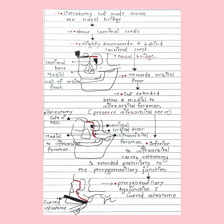The first osteotomy cut is made across the nasal bridge, above the lacrimal crest, and slightly downwards and behind the lacrimal crest, then towards the orbital floor. This cut is extended below and medial to the infra-orbital foramen, because we have to preserve the infra-orbital nerve. Then, inferior to the infra-orbital nerve, the osteotomy cut is extended posteriorly till the pterygomaxillary junction — just like Le Fort one. Then pterygomaxillary disjunction is carried out with a curved osteotome, to mobilize the maxilla.